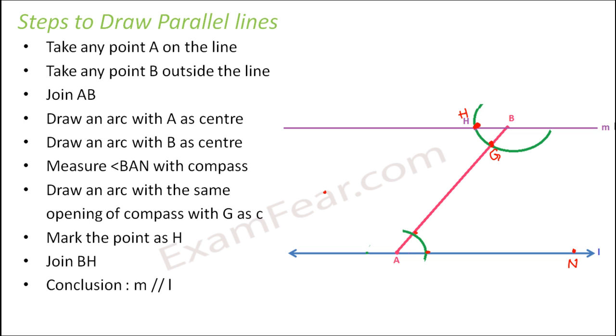Now when you join BH, what do you get? You get another line. So this line M is parallel to L. So why are they parallel? Because their alternate angles are equal. So if this is angle 1, this is also angle 1. So basically angle 1 is equal to angle 2. So this is how we draw parallel lines.